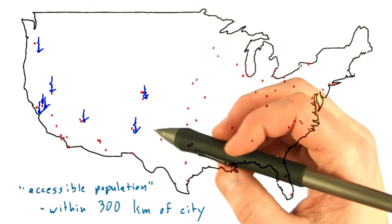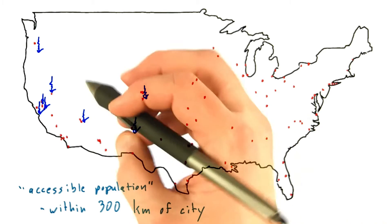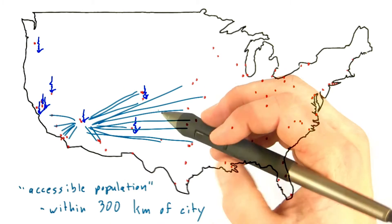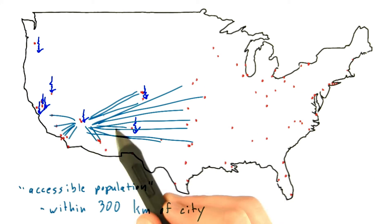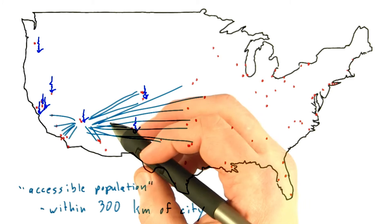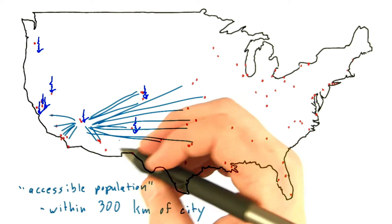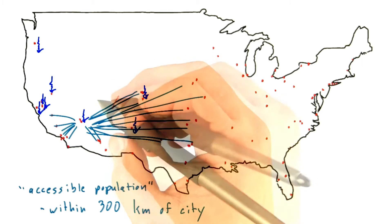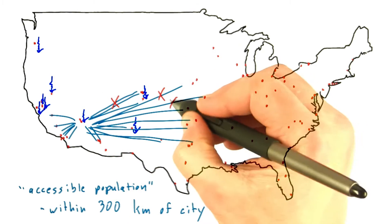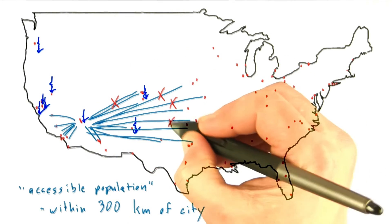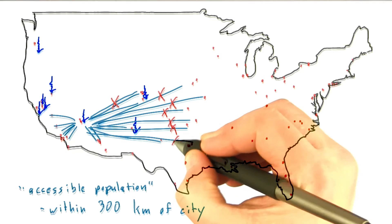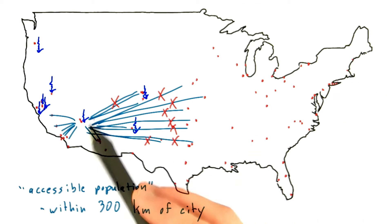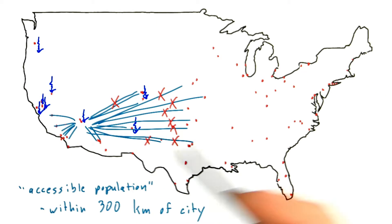How are we going to find the accessible population of each city? You could launch a thread for each city and have it look at every other city. It could compute the distance to all those other cities, and if it's under 300 kilometers, add the population of that other city to a running total. In practice, most cities would be more than 300 kilometers away and you'd just discard them. That would be really inefficient — having every city check every other city.